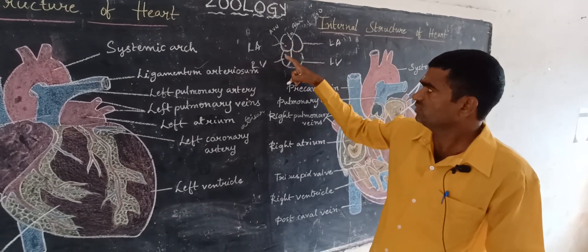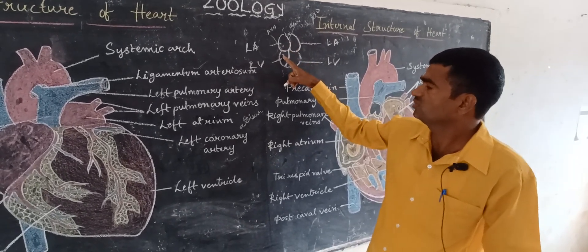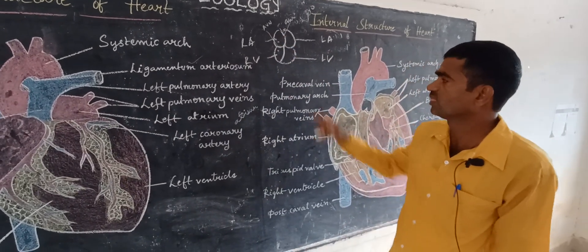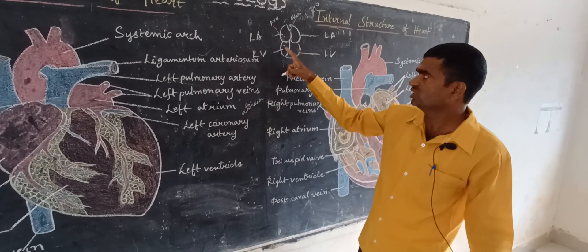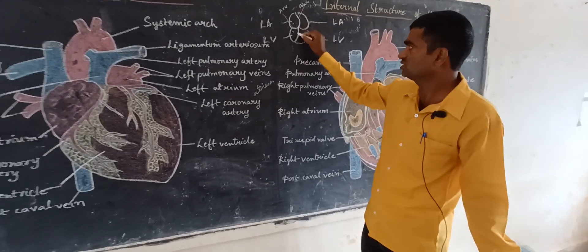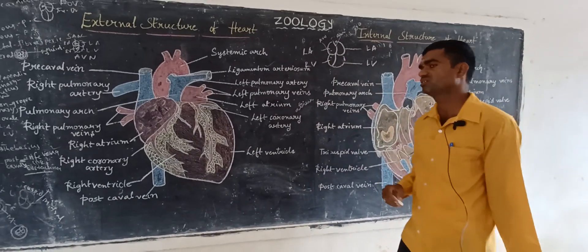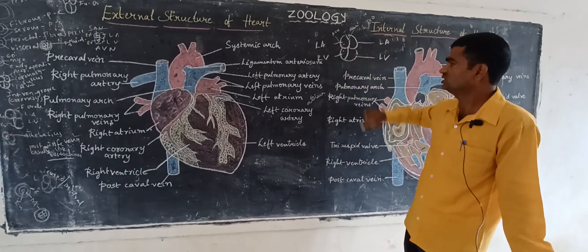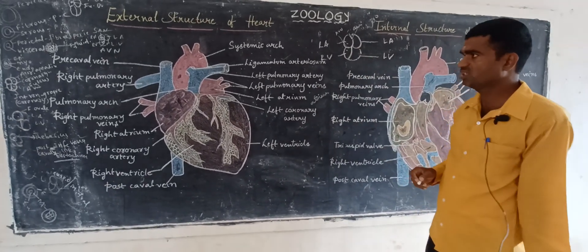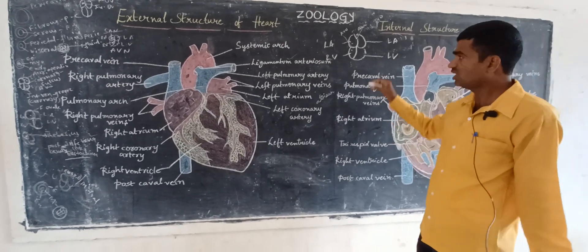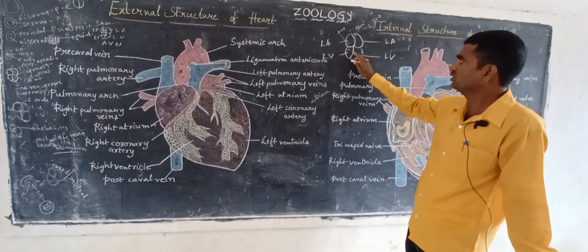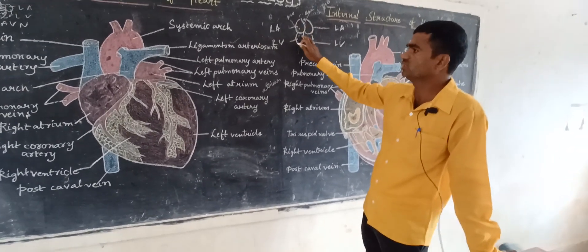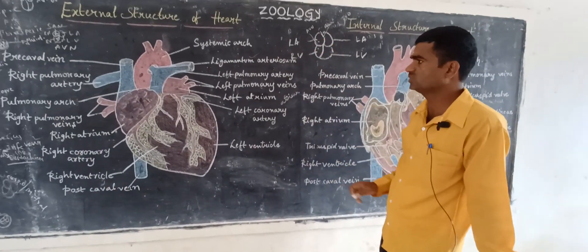One atrium and one ventricle is divided with the help of the atrioventricular node or atrioventricular groove. Where it divides the two ventricles, the part is called the ventricular groove, also known as the interventricular groove. There is also the interatrial groove and atrioventricular groove.